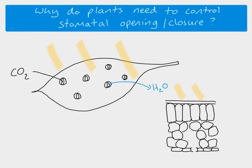We can also think about a situation where there's no light. If it's dark — maybe it's night time — then the plant can't photosynthesise anyway. So if the plant can't photosynthesise, there's no point having the stomata open because the plant doesn't need any carbon dioxide to be going into the leaf. So if they were left open it would be losing water. So if it's dark, close the stomata; if it's light, open the stomata.